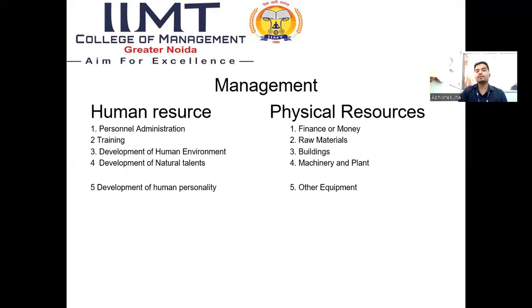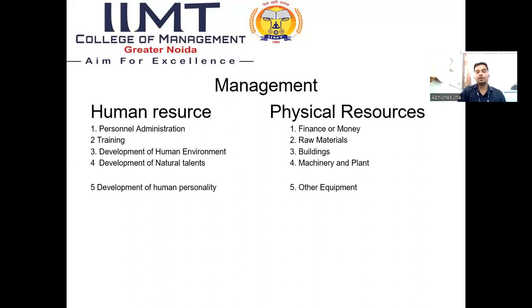If we talk about physical resources: suppose we have a good amount of administration and good human resources, but to implement all this and fulfill the objectives of the organization, we must have physical resources — like finance, which can be called the petrol of businesses. Second is raw material; if we don't have raw material we cannot make finished products. Third is building — fixed assets, anything like plant and machinery, and other resources.